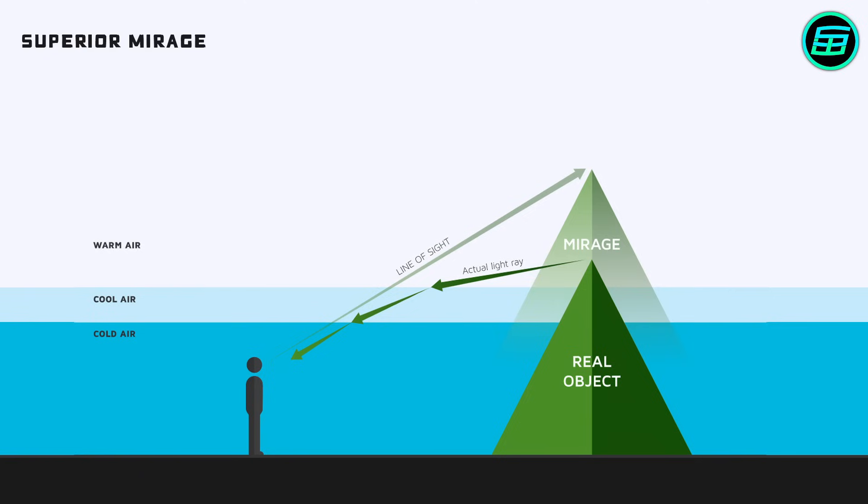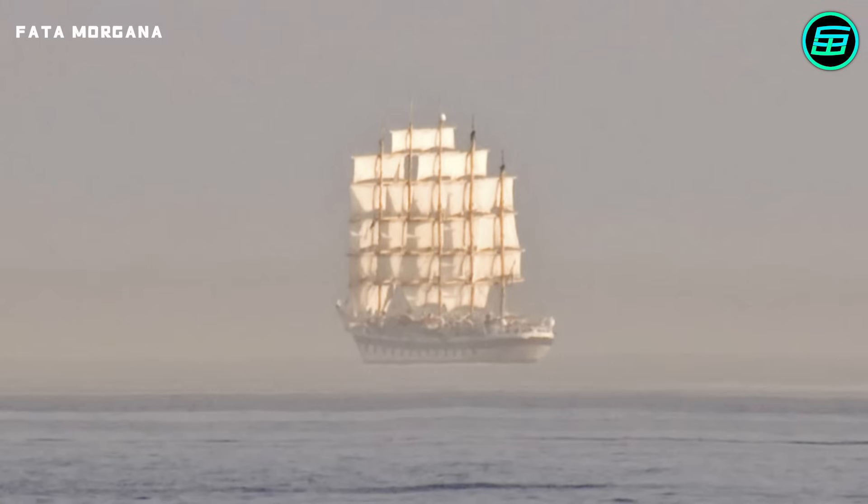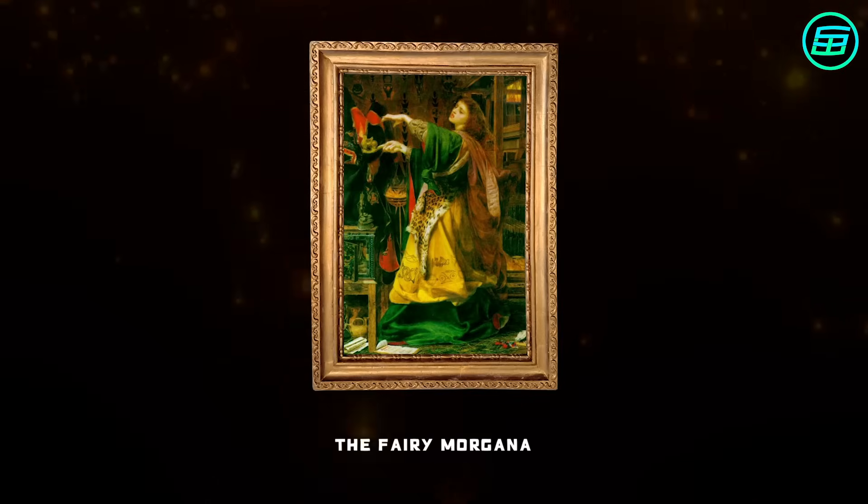Superior mirages are quite common in polar regions. A so-called Fata Morgana is a kind of superior mirage. Although generally seen in polar regions, it may be observed almost anywhere. The name comes from La Fata Morgana, which in Italian means the Fairy Morgana.